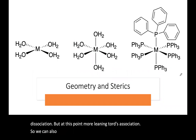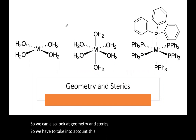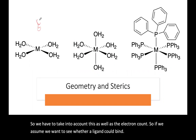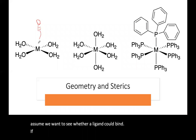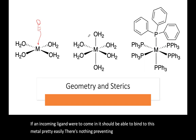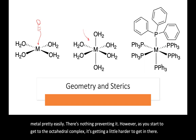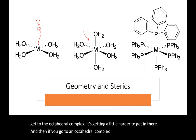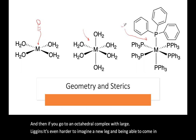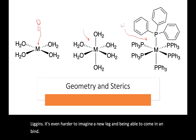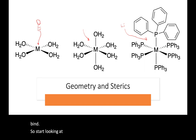We can also look at geometry and sterics, which must be considered alongside electron count. If an incoming ligand approaches a metal with few existing ligands, it can bind fairly easily — there's nothing preventing it. As you move to an octahedral complex it gets harder to get in, and with large ligands on an octahedral complex it's even harder to imagine a new ligand binding.